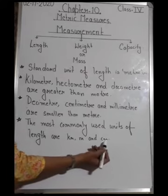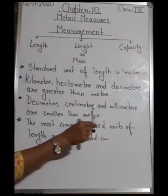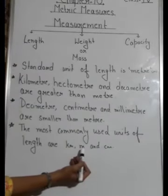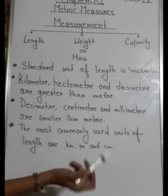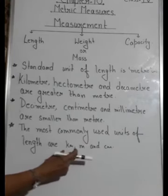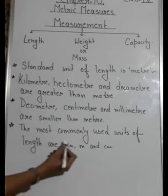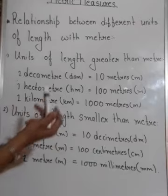The most commonly used units of length are kilometer, meter, and centimeter. Centimeter is used to measure short lengths, like the length of a pen, marker, or pencil. Meter is used to calculate longer lengths like the length of a car or a saree, and short distances. Kilometer is used to measure very long distances.